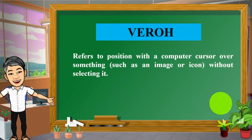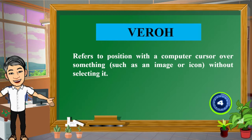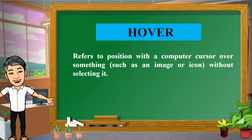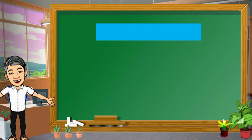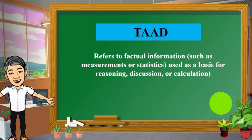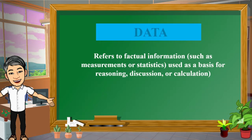This refers to position with a computer cursor over something, such as an image or icon, without selecting it. And the word is hover. This refers to factual information, such as measurement or statistics, used as a basis for reasoning, discussion, or calculation. And the word is data.